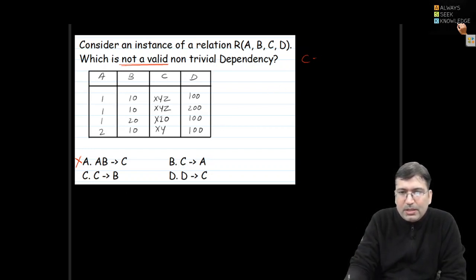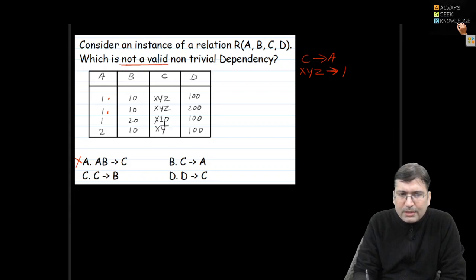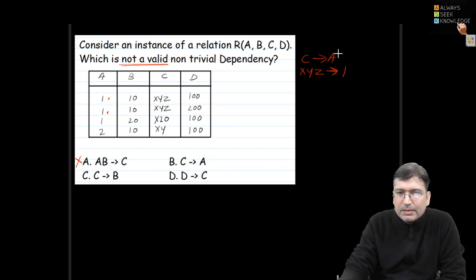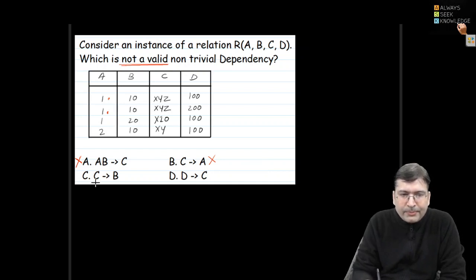Checking C implies A: XYZ in C maps to 1. There are two occurrences of XYZ and both map to 1 only, so there is no problem. There is only a single occurrence of X10 and XY respectively, so no violations. This functional dependency also holds good and is a valid dependency — not the answer we are looking for.